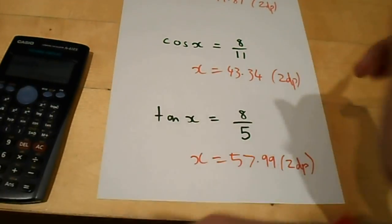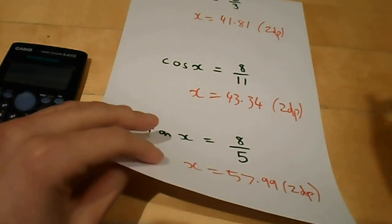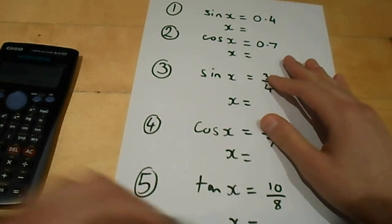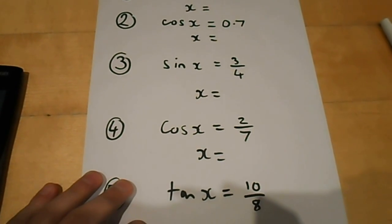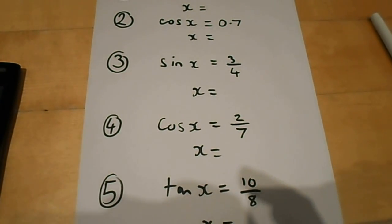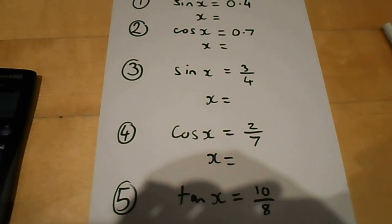Now, in the next lesson, we will be using SOHCAHTOA and trigonometry to find angles and right-angled triangles. But what you're going to practice before that lesson is using your calculator, just like I did in that video. So, here are the five questions that I would like you to do before the next lesson, please.